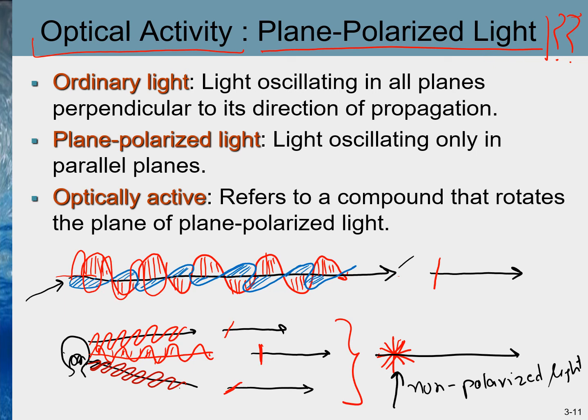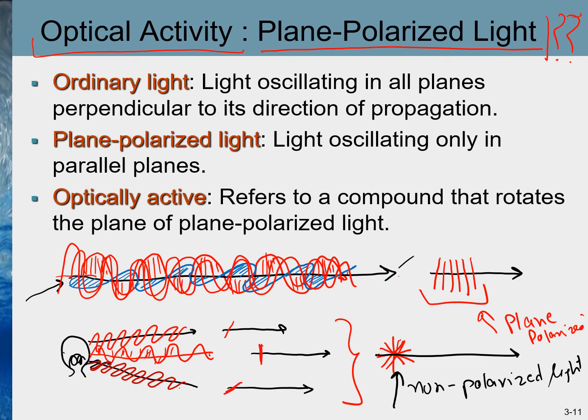If by some means we cut off all waves going in random directions and allow only one direction to pass through, then all waves have their plane of polarization in just one plane. This kind of light is known as plane-polarized light — light that oscillates only in parallel planes.